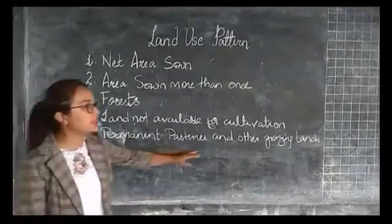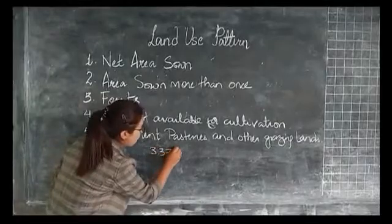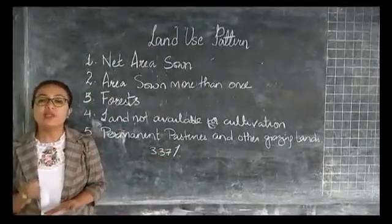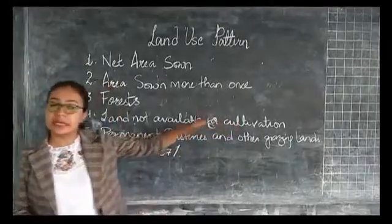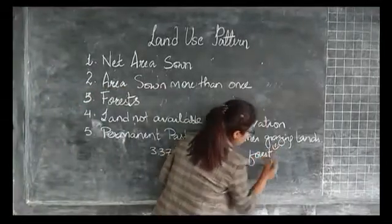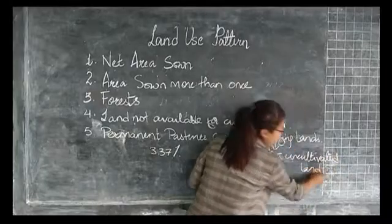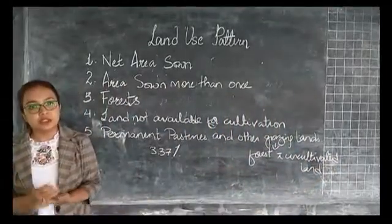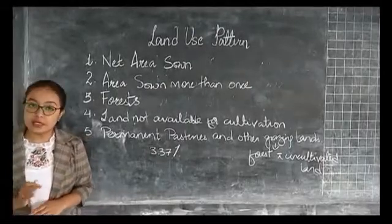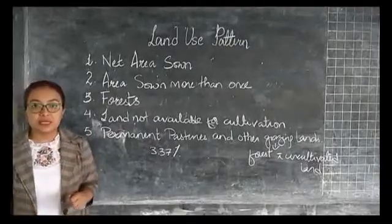Number five, we have permanent pastures and other grazing land. A total of about 3.37% of the total reported area of the country is devoted to permanent pastures and other grazing land. Grazing land is mostly in the forest and uncultivated lands. The area presently under pastures and other grazing land is not sufficient, keeping in view the large livestock population in the country. About one-third of the reported area in Madhya Pradesh is under pastures.